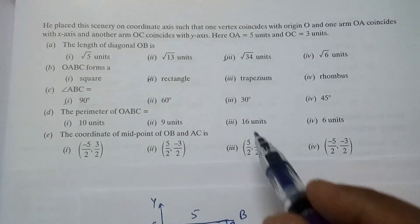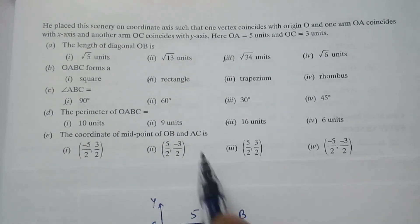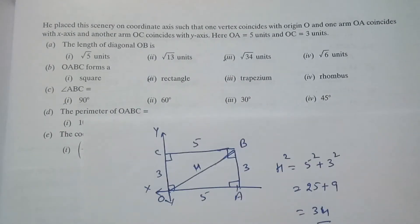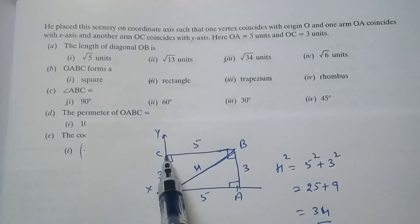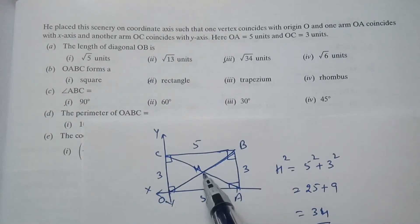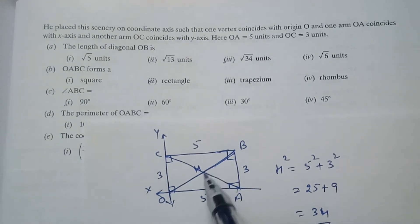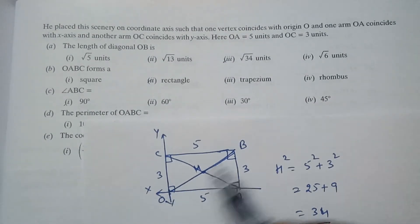Then next question. This is the last answer. The coordinates of the midpoint of OB and AC. So OB and AC are diagonals. So midpoint because in rectangle diagonals are equal and their midpoint will be common.